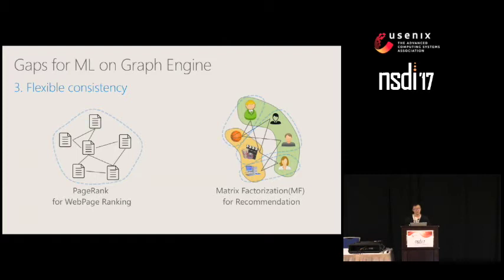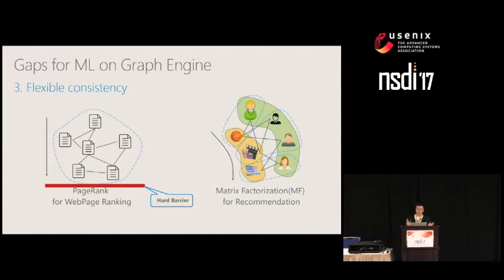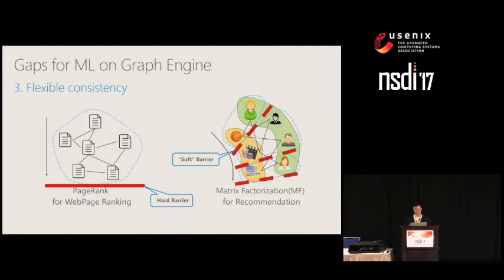Third, machine learning workloads may require different consistency models. In distributed graph engines, several workers process the whole graph and wait at the end of each iteration with a hard barrier. In machine learning, hard barriers in every mini-batch introduce too much synchronization overhead. Since machine learning algorithms are typically error-tolerant and may converge even with stale state, it is better to support flexible consistency using a softer barrier, allowing faster workers to continuously make progress.